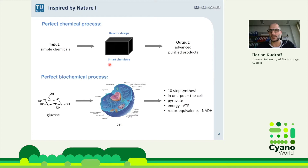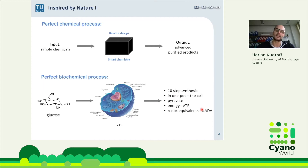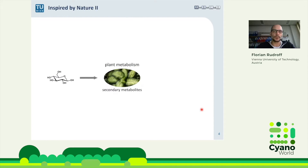This sounds easy and fancy, but it's nothing new — nature is already doing that. We have the perfect biochemical process: a cell takes an input like glucose, the cell represents the black box, and many reactions occur inside. Glycolysis, for example, is a 10-step synthesis in one pot — you gain ATP energy and NADH. It's a very fast and efficient process.